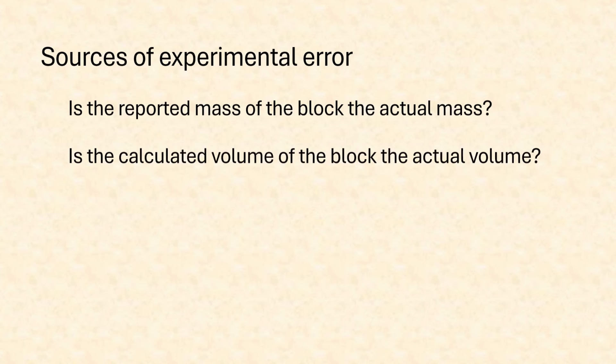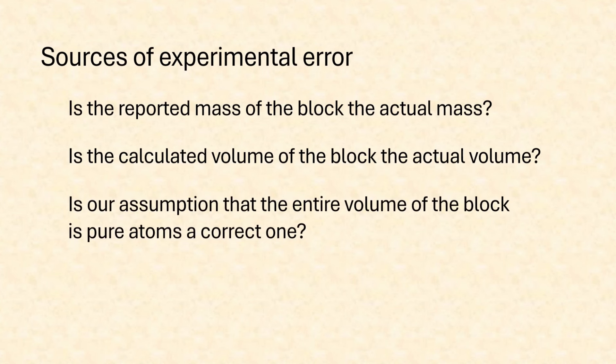Finally, step 6 is to perform an error analysis. Experimental error involves assumptions that we make in an experiment that might not be correct. For example, we assumed that the balance gave us the correct mass of the block — but did we calibrate that balance before we began? If not, we might be incorporating some error. If we used a graduated cylinder to determine the volume, how accurate and precise is that graduated cylinder? Students can think of ways to reduce these sources of error. Another more important source of error is a very big assumption from step 4: we're assuming that the entire volume of the block is composed of pure wall-to-wall atoms. But whenever you have a bunch of spheres in a container, there's some space in between those spheres. In our calculations, we did not account for that interstitial space between the metallic atoms, so that throws off our answer as well.